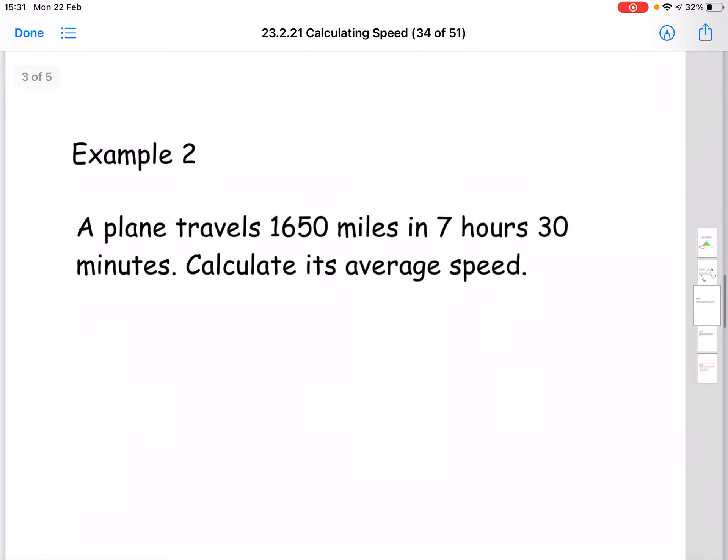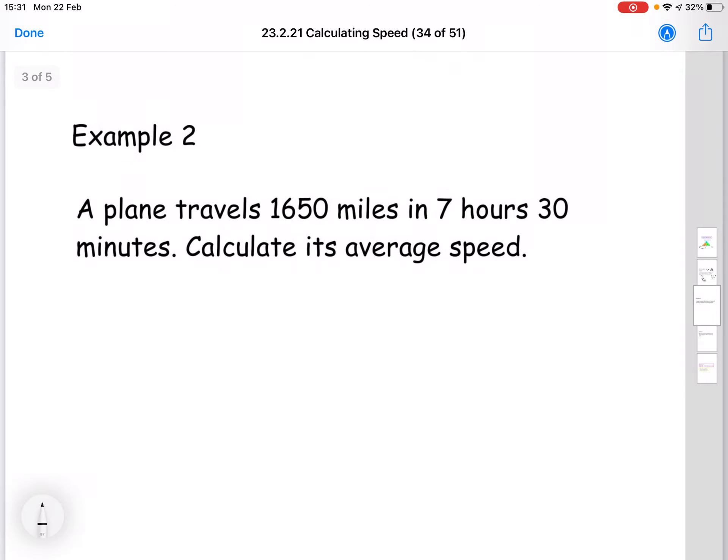Example two is a sort of yellow style example. So here we have a plane travels 1650 miles in seven hours, 30 minutes. Calculate the average speed. So again, we would write out our three variables.